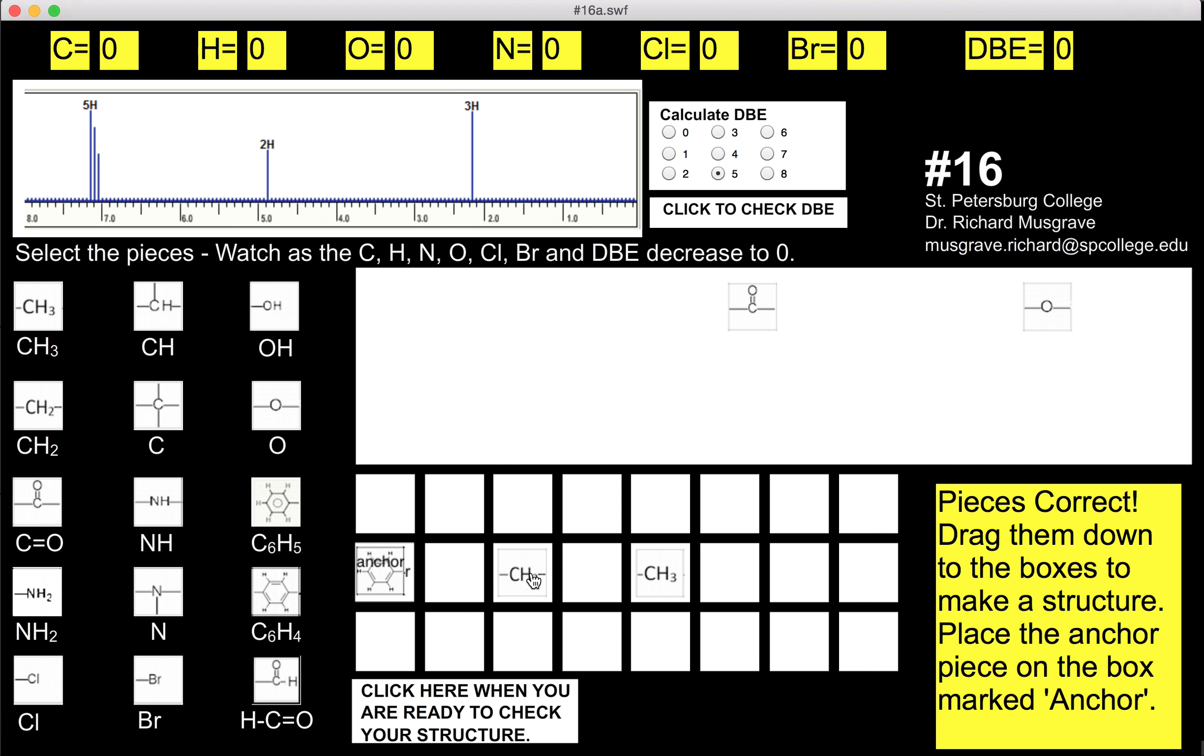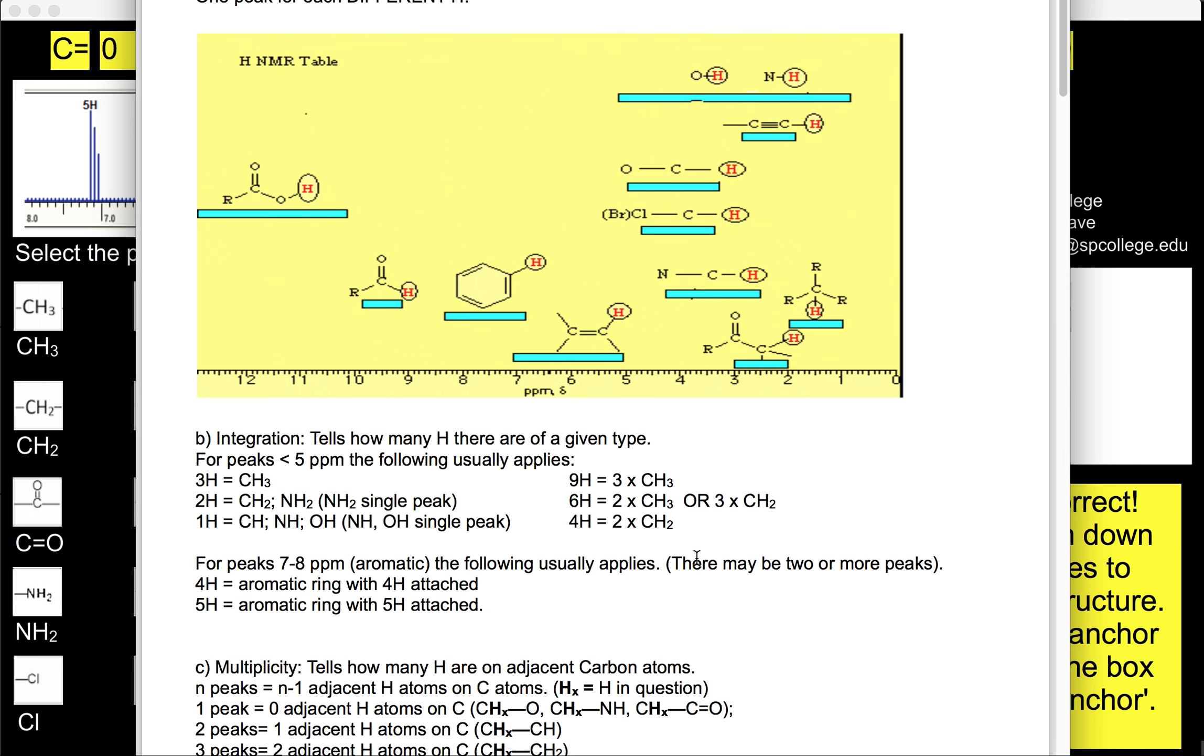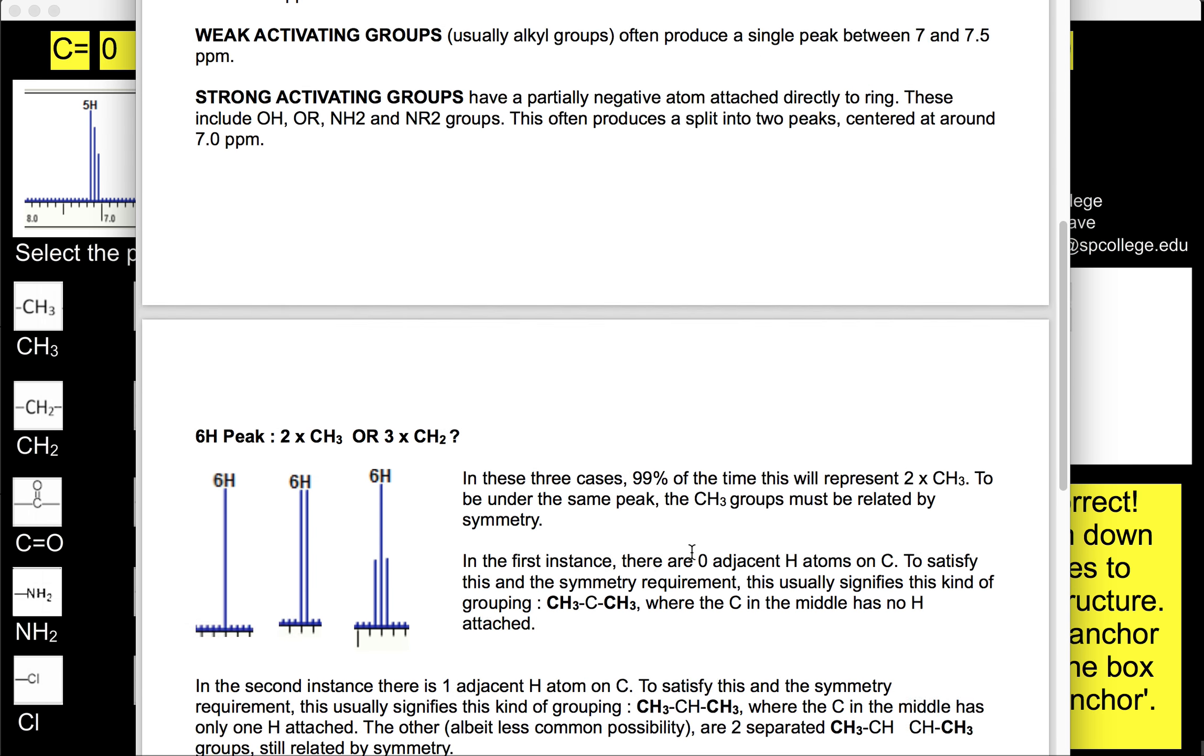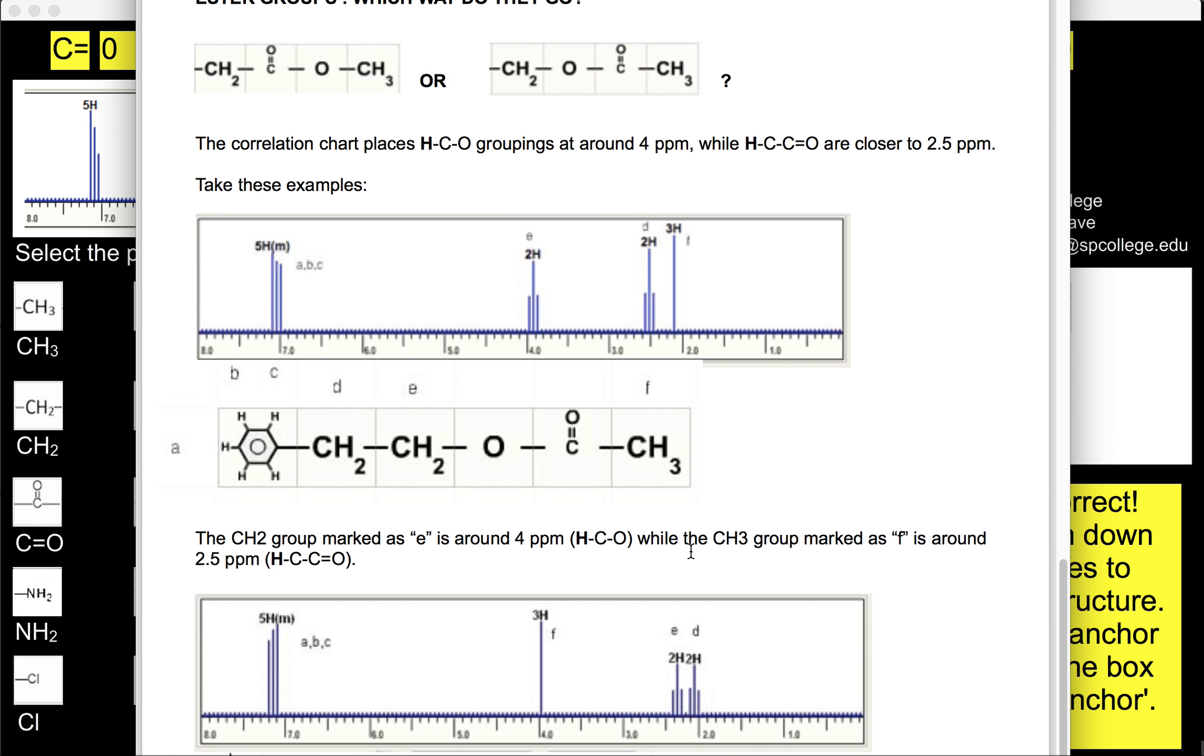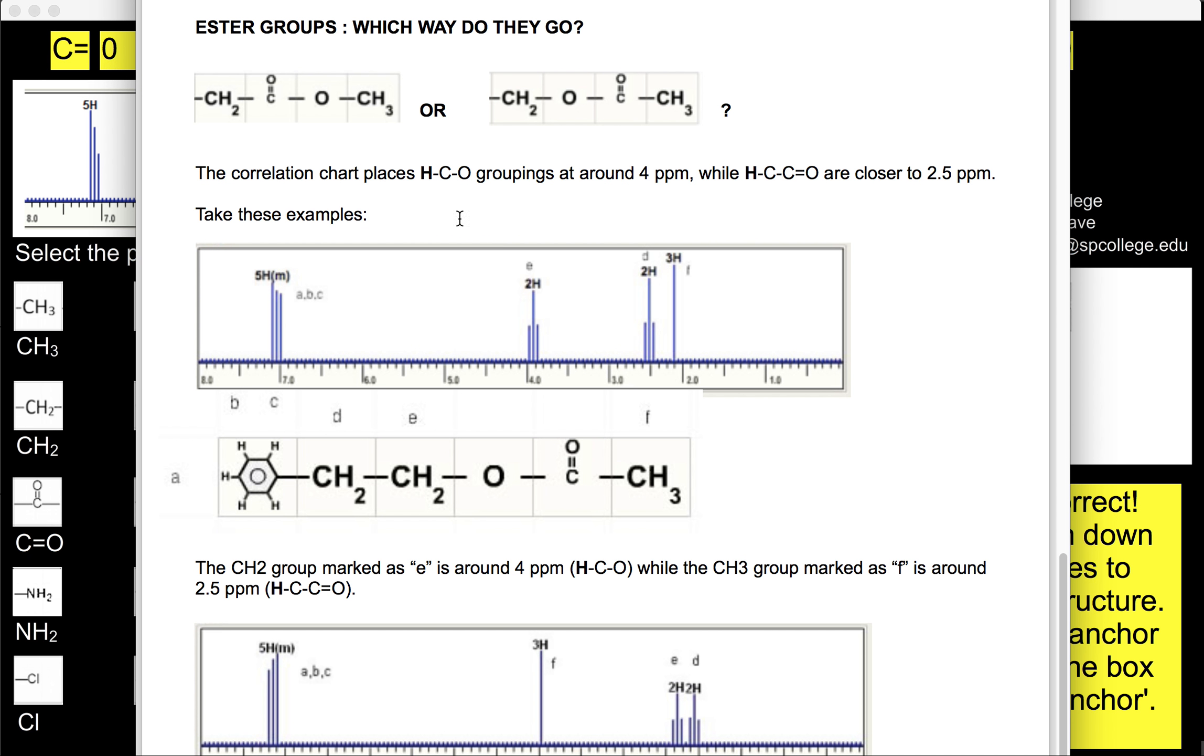So now we know that the CH2 and the CH3 are separated. We just have to figure out where the C double bond O and the O go. A couple of clues that we can look at here.